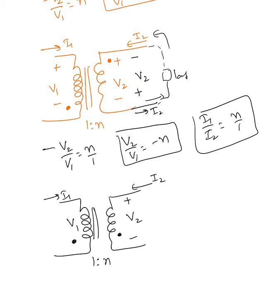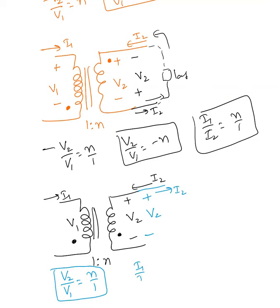Here i1 current is leaving the dot, so the dotted terminal must be negative. The given v2 and the dot-convention v2 are both in the same direction, so there is no negative: v2 over v1 equals n, a positive value. For the current, i2 is supposed to go out of the positive terminal, but the given direction is opposite, so i1 over negative i2 equals n, meaning i1 over i2 equals negative n. In the next video I'll start solving an example using this transformer ratio.